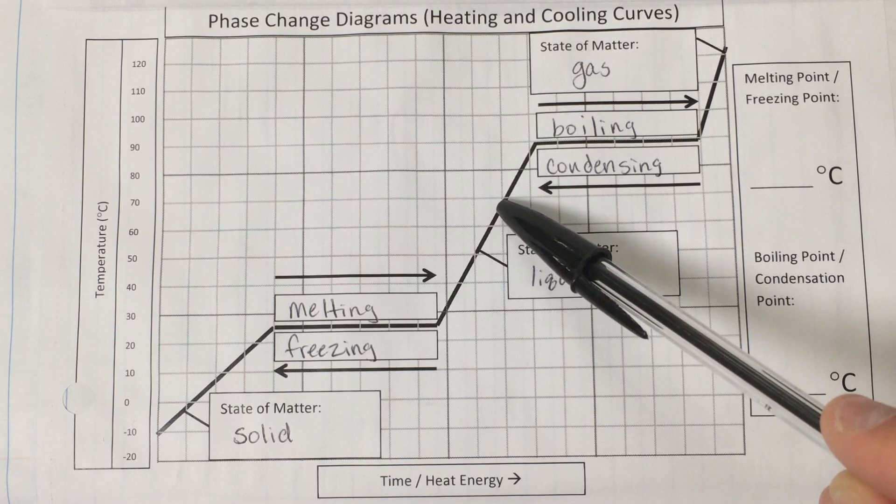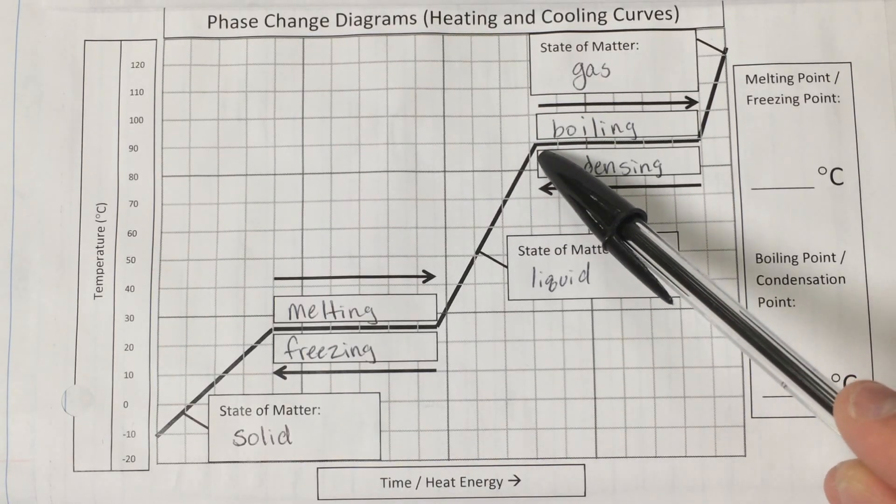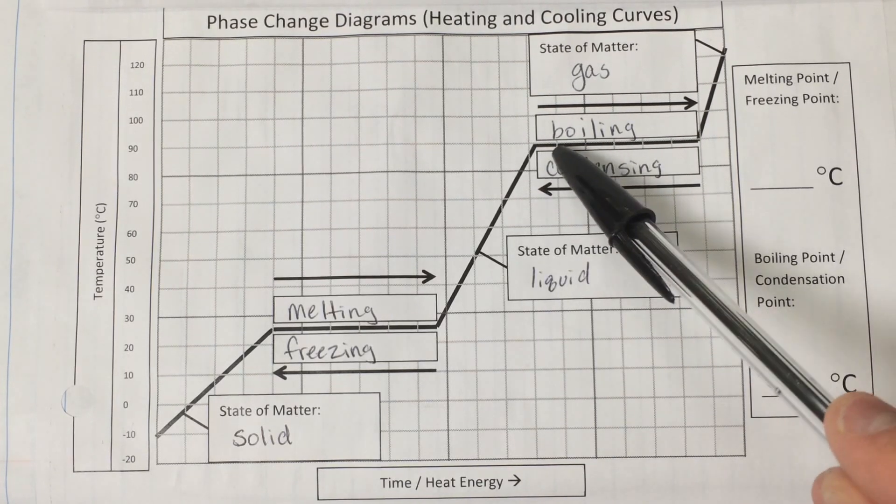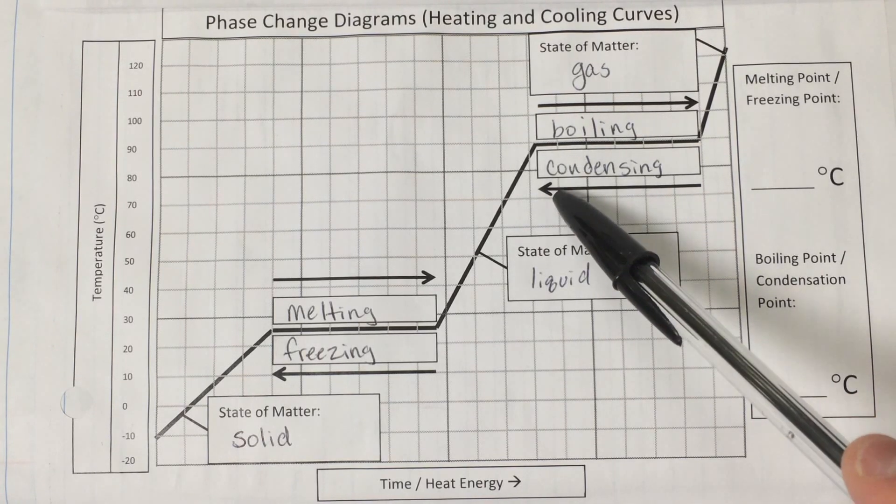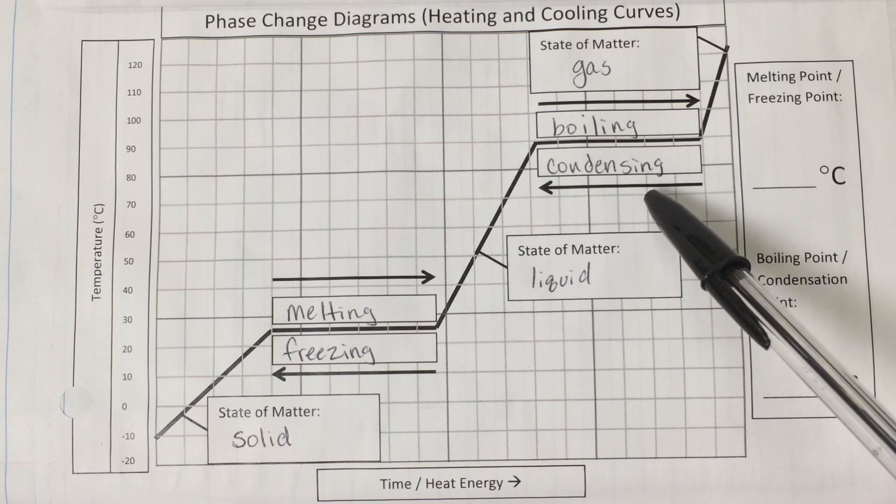And the temperature of that substance will continue to increase until it hits another plateau, and this is because we've reached the boiling point. So at this temperature, the temperature will stop increasing because the substance will start boiling, it'll start another phase transition, and temperature is always constant during a phase transition.